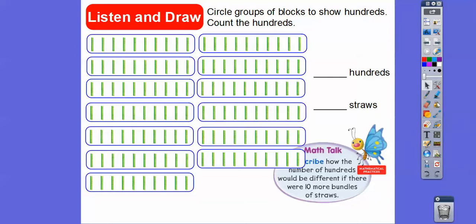After counting, we now have thirteen bundles total — because we added ten to three. So there are thirteen hundreds, and that gives us 130 straws. Remember, each straw has ten cubes in it, so if you add a zero, there would be 1,300 cubes inside those 130 straws.